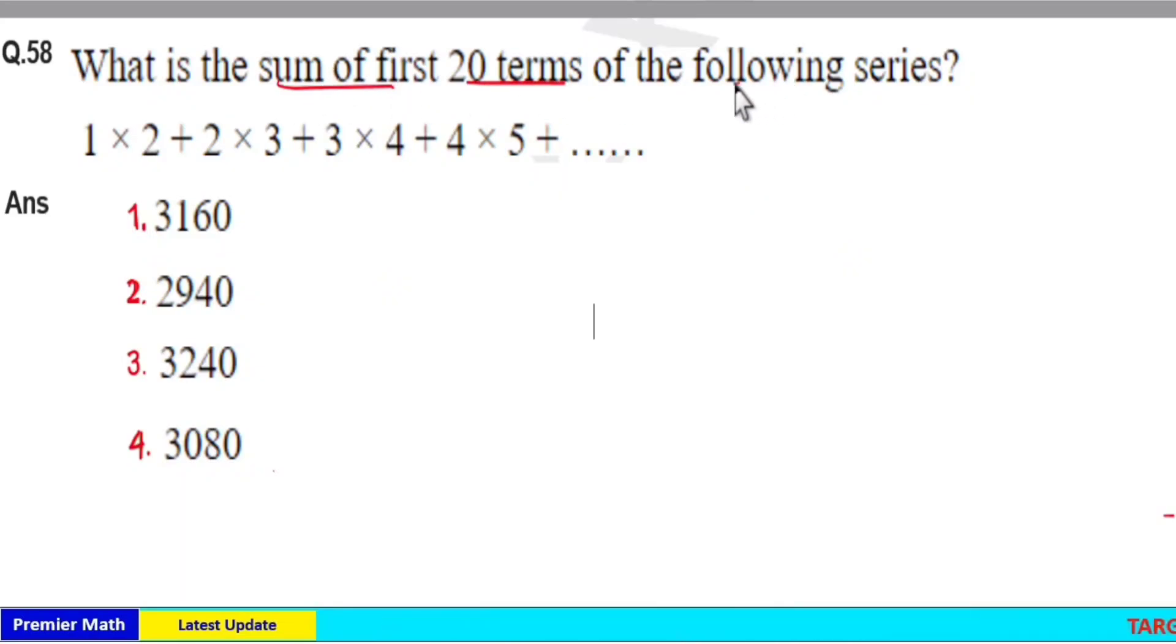What is the sum of first 20 terms of the following series? This is 1 into 2, 2 into 3, 3 into 4 up to 20th term. 20th term must be 20 into 21.